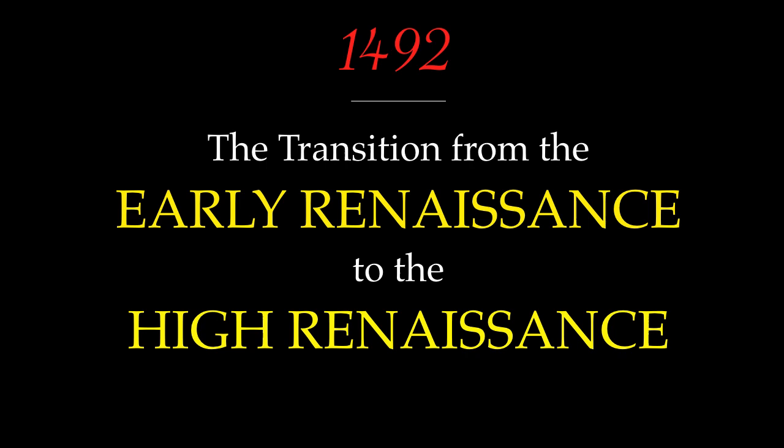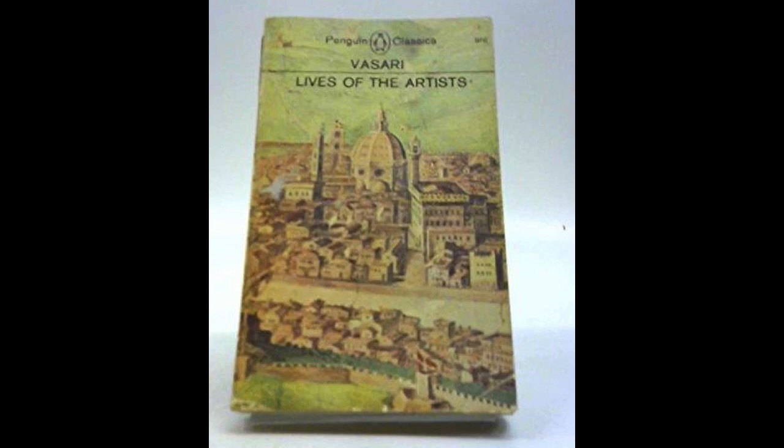The year 1492 is used as the dividing point, though there's really no clear year for the transition from early to high Renaissance. So much happens in 1492: the death of Lorenzo de' Medici, Pope Alexander VI becoming pope, and Christopher Columbus sailing the ocean blue. It's just a nice, easy year to remember since so much else happens in that important year in European and world history.